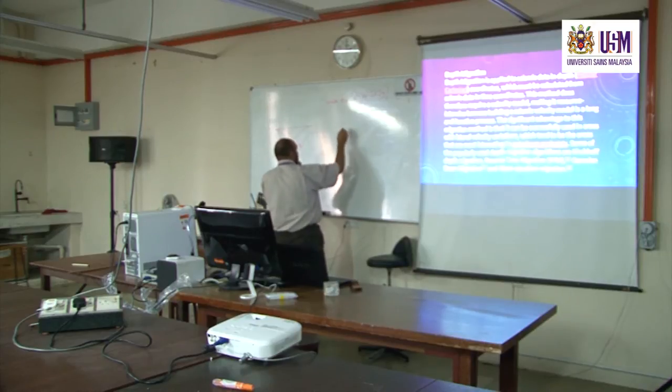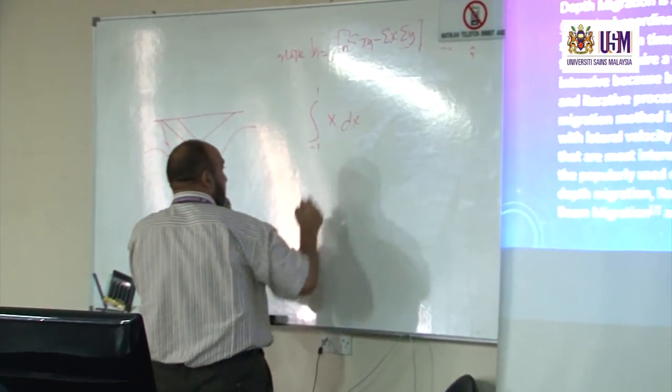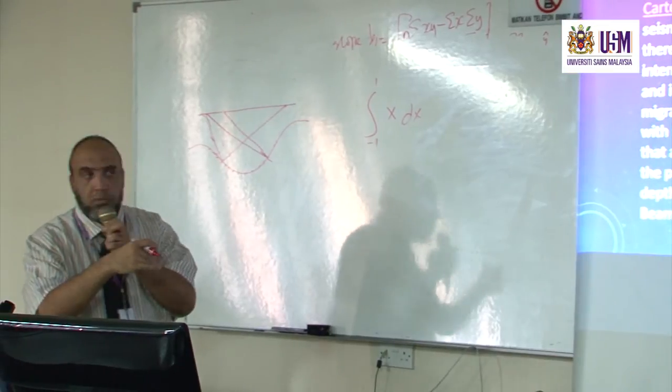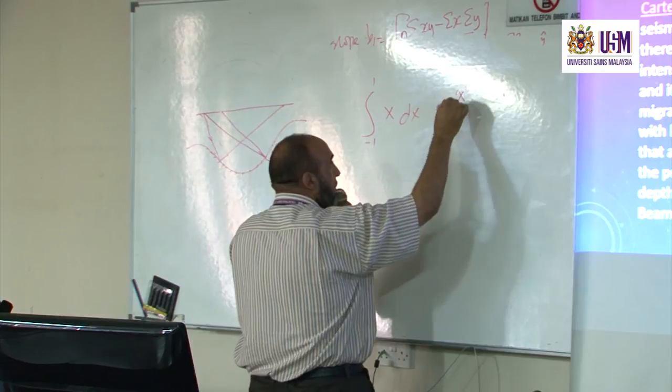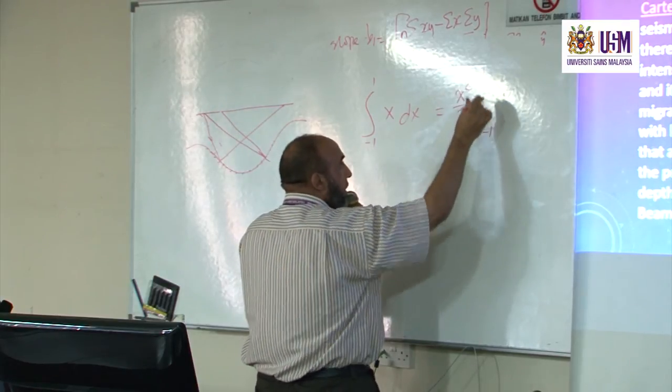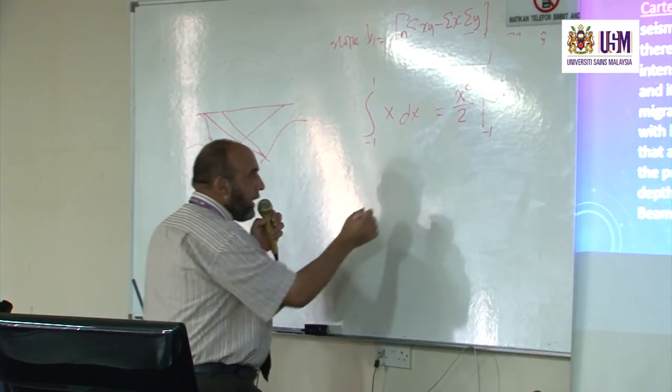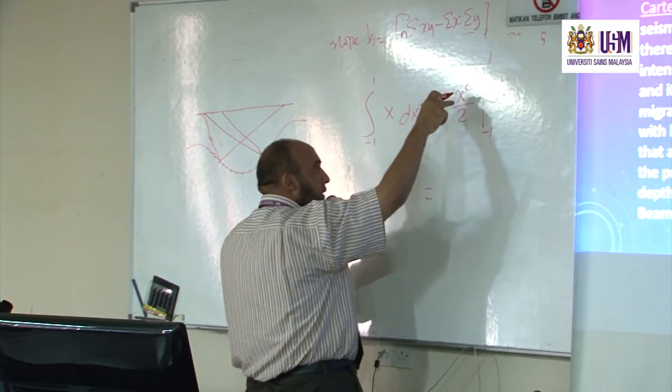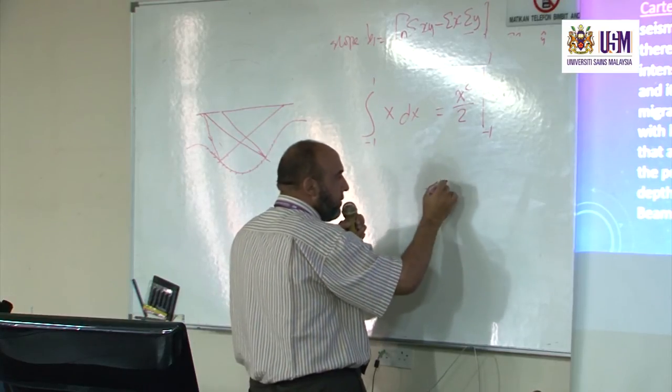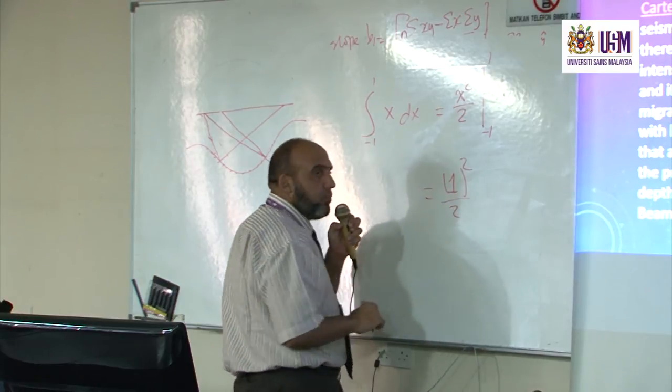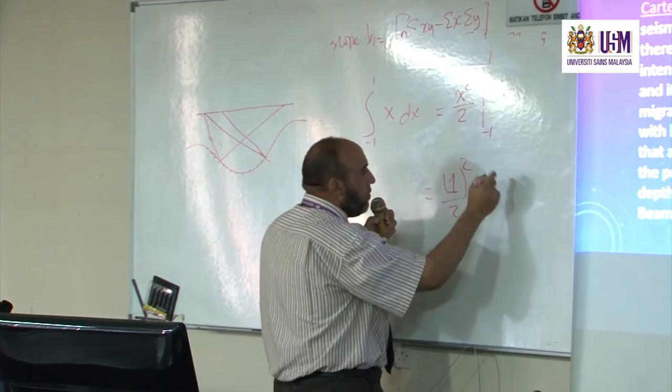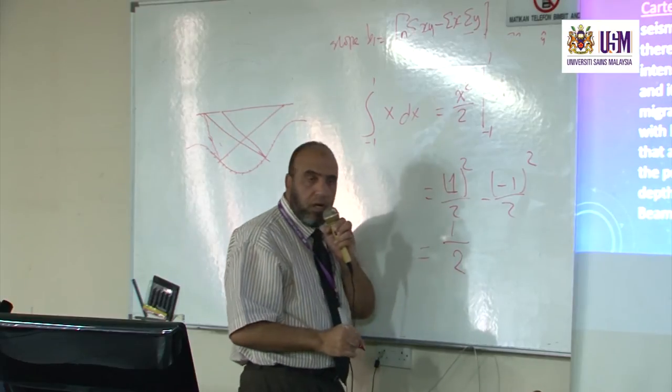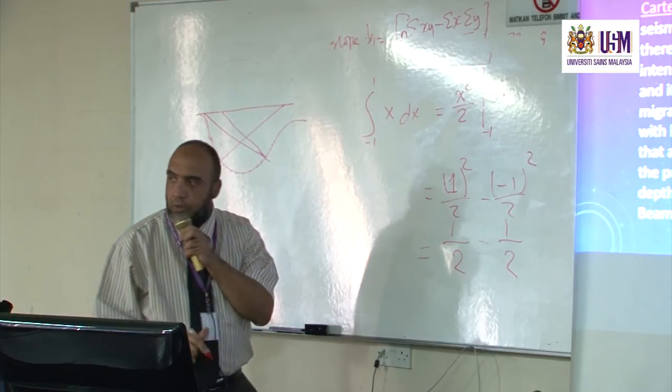Say for minus 1 to 1, x dx. Okay, this is part of the definition of the a_0 term. This integration equals x squared divided by 2 between minus 1 and 1. So it equals, we will substitute x squared by 1 and substitute x squared by minus 1. We have 1 squared divided by 2 minus minus 1 squared divided by 2. The result is 1 half minus 1 half, which equals 0.